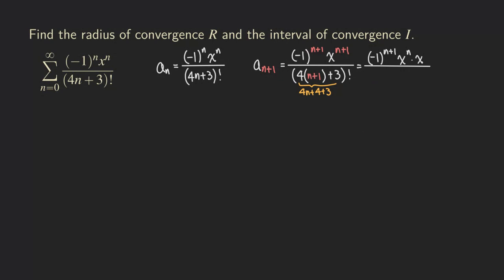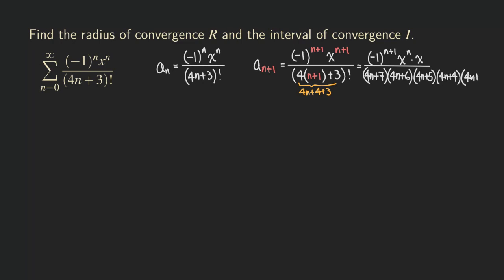So we are going to get a lot of factors showing up here. Eventually we get down to 4n plus 3 factorial — the largest factor is 4n plus 7, then 4n plus 6, 4n plus 5, 4n plus 4, and then 4n plus 3 factorial.